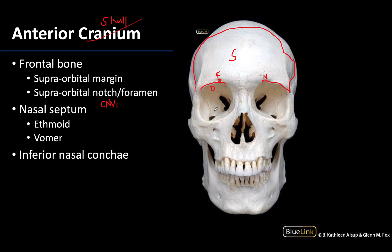Moving to the nasal septum — what I'm outlining here — we are looking into the nasal aperture. Running right down the midline, usually with a slight deviation, is the bony nasal septum. This nasal septum divides the nasal cavity into right and left parts. It is made up of two bones: the ethmoid, which is the more superior bone, and the vomer, which is the more inferior bone. You can see kind of where they're articulating right about here.